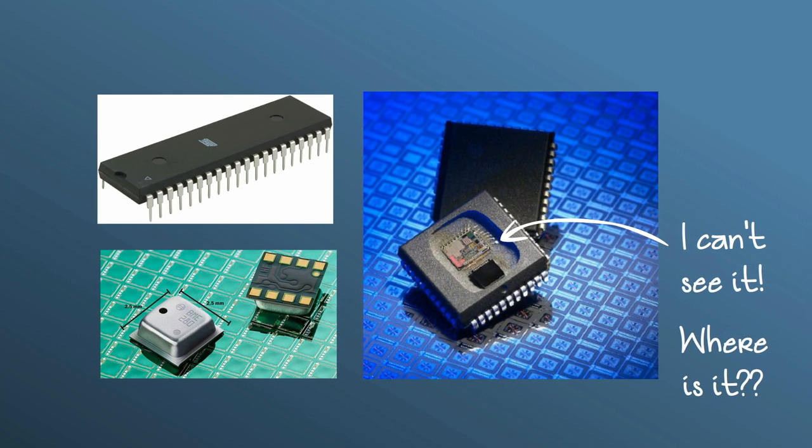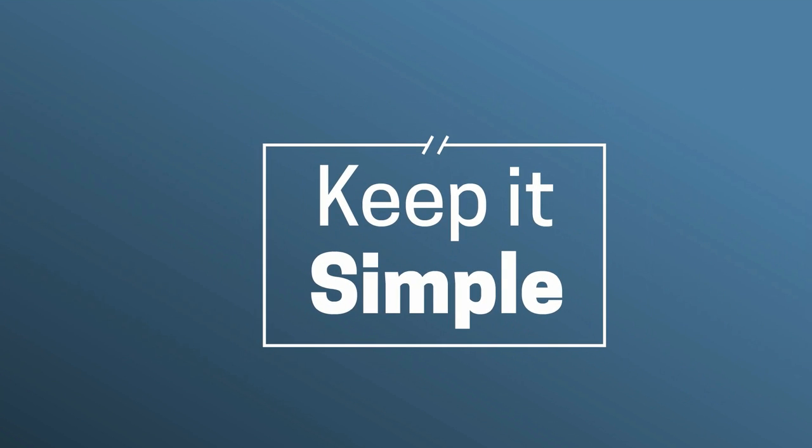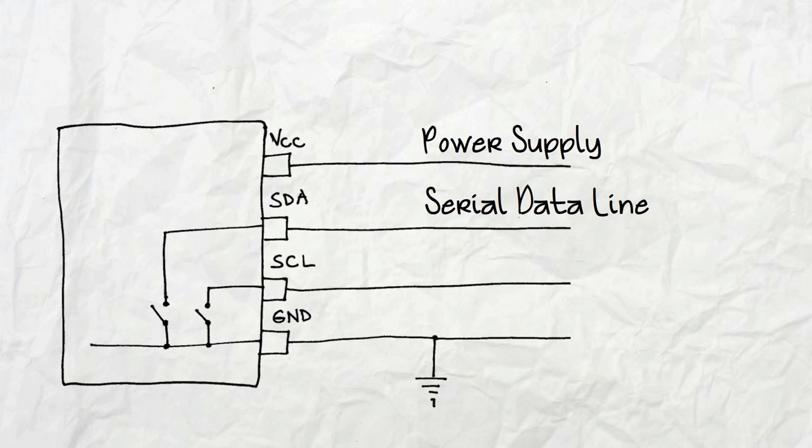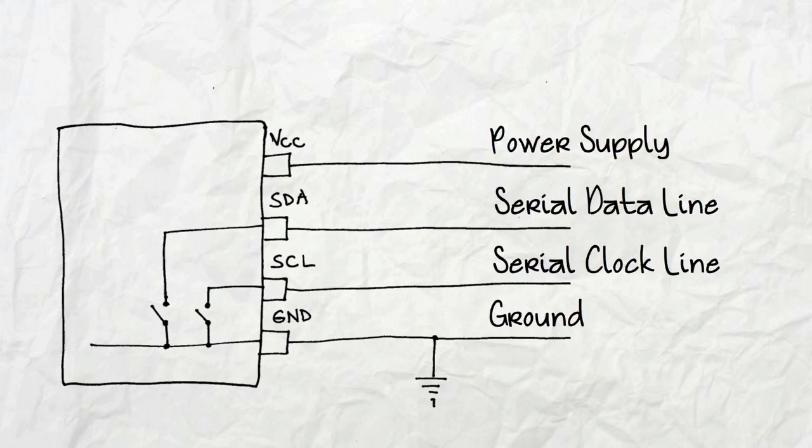Now, this is important. We need to see how the I2C bus looks like inside the device. So let's keep it simple, really simple. Now let's pretend these are the pins of your device. You have your power supply, the serial data line, the serial clock line, and the ground.